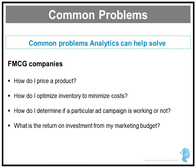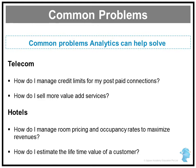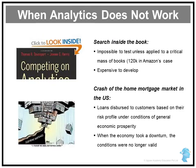FMCG or CPG companies use analytics to price products, optimize inventory, determine if a particular ad campaign is working, and calculate the ROI from their marketing budget. Telecom companies use analytics to manage credit limits and sell more value-added services. Hotels, airlines, and anyone with a perishable inventory use analytics to optimize pricing, optimize occupancy, and estimate the lifetime value of their customers. These are all examples of common business problems that can be solved using analytics.